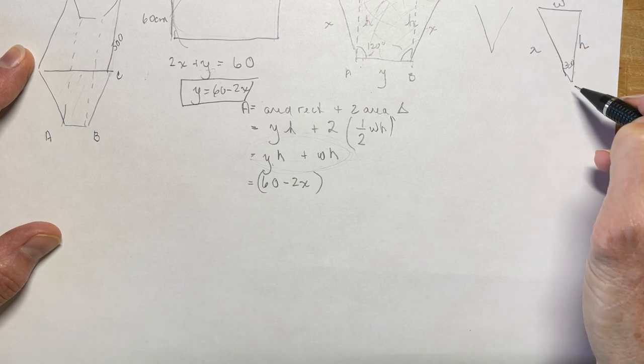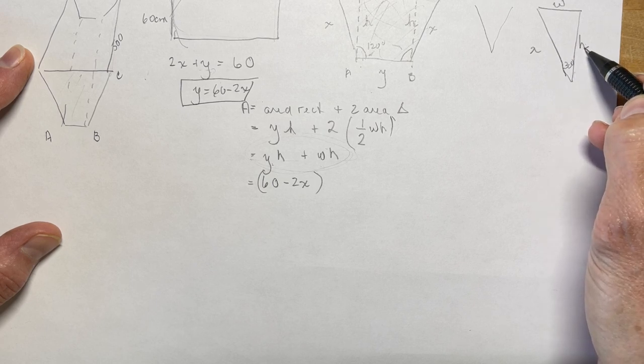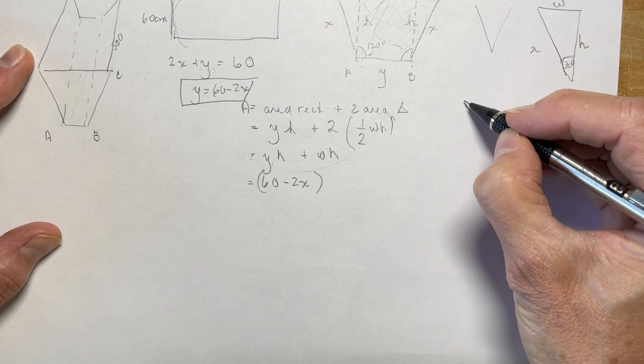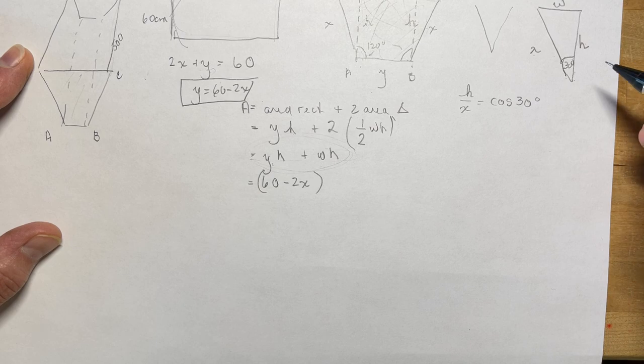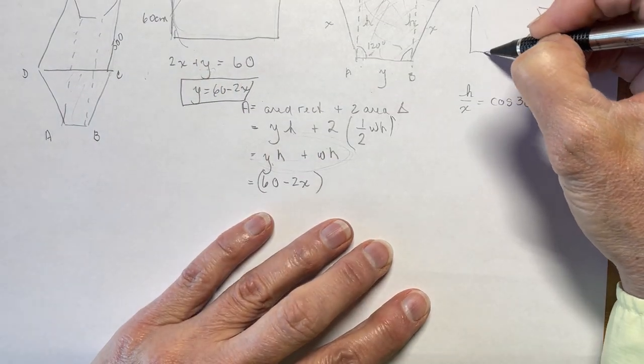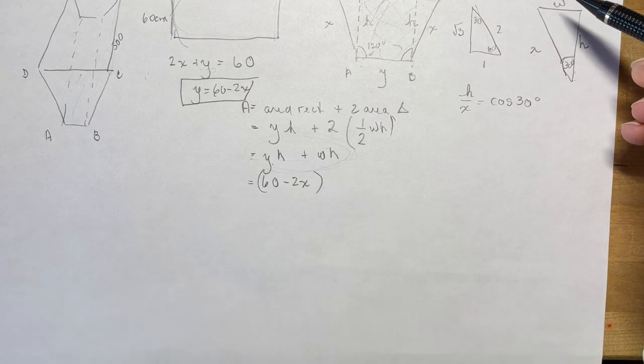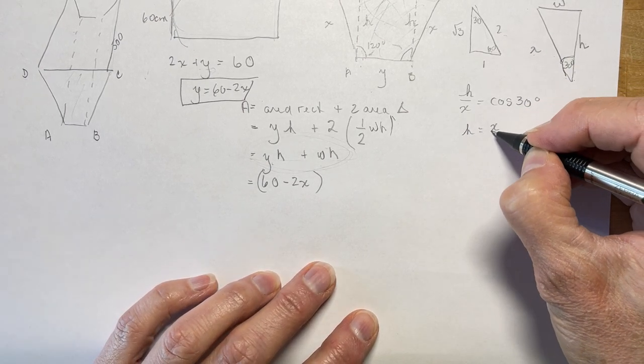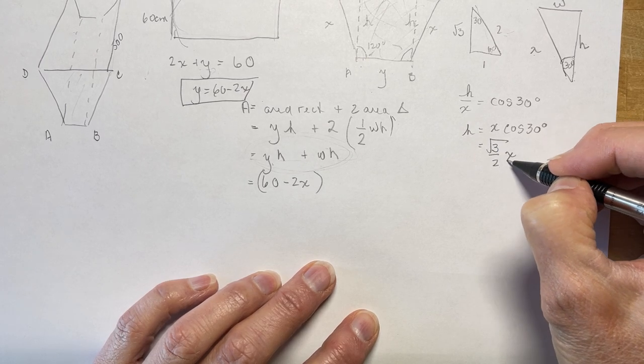So we have this little triangle here. How do I talk about h in terms of x? So h is going to be, I have 30 degrees, so that would be the adjacent over the hypotenuse is the cos of 30. So h over x is equal to cos of 30 degrees. Remember your 30-60 triangles. The cos of 30 is root 3 over 2. So that means h is going to be x times the cos of 30 degrees, which is root 3 over 2x. That's h.